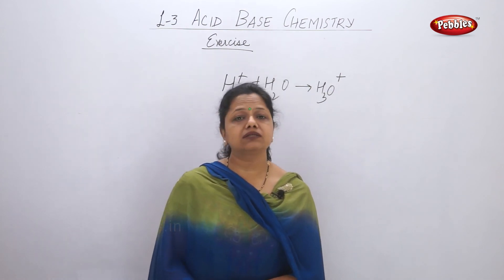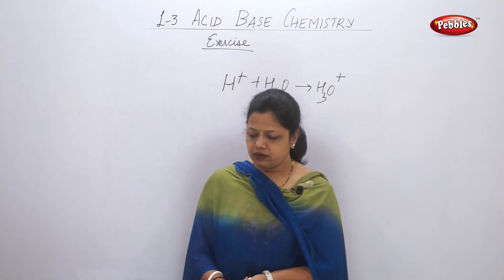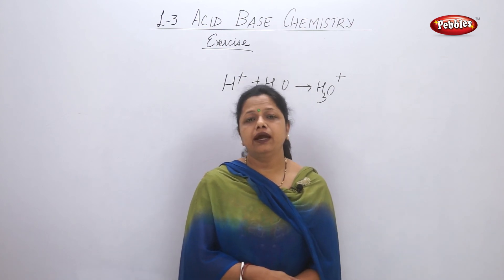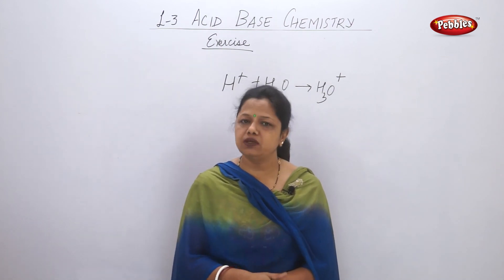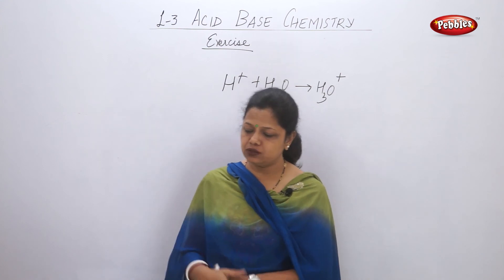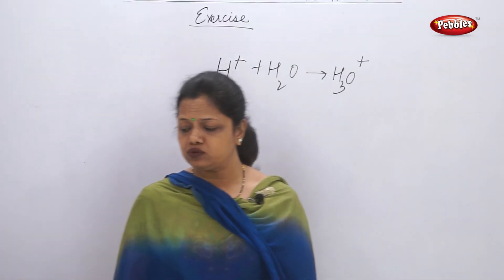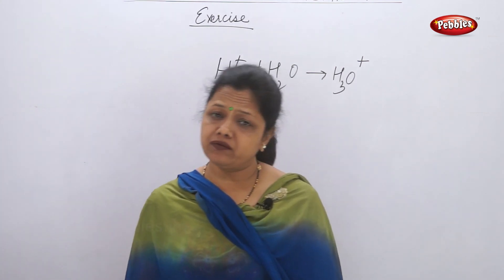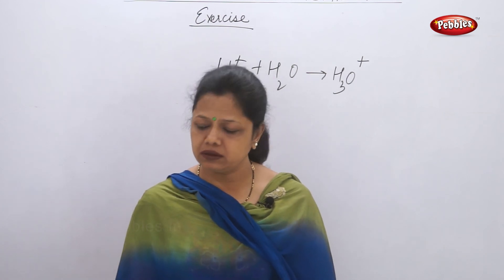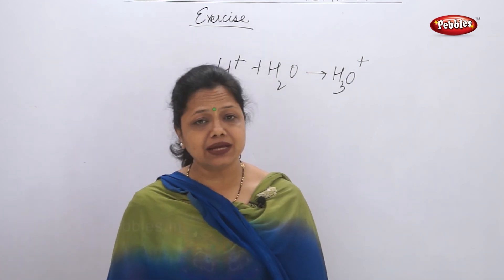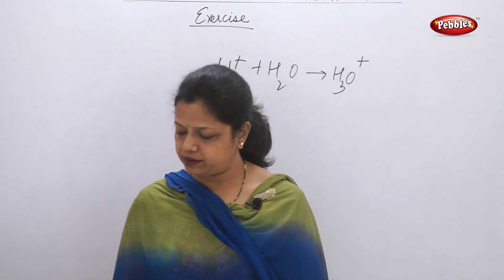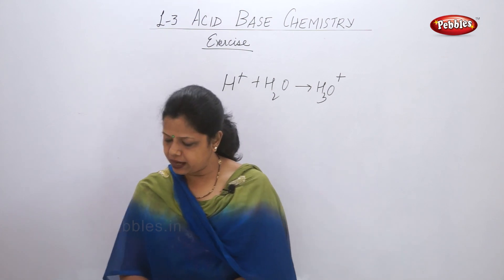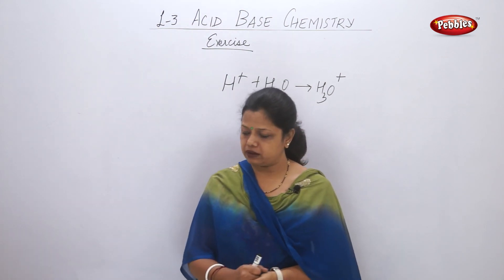How is bleaching powder prepared? Bleaching powder is calcium oxychloride (CaOCl₂). If we pass chlorine gas over dry calcium hydroxide, it forms a powder called bleaching powder. It is used for whitening of clothes, disinfecting water, and bleaching action.